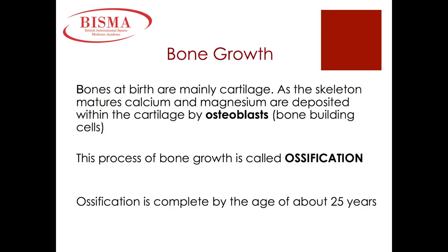The process of bone growth is called ossification, which is usually completed by the age of 25. Ossification is enabled through two cells: osteoblasts, which are bone-building cells, and osteoclasts, which clear away old bone.